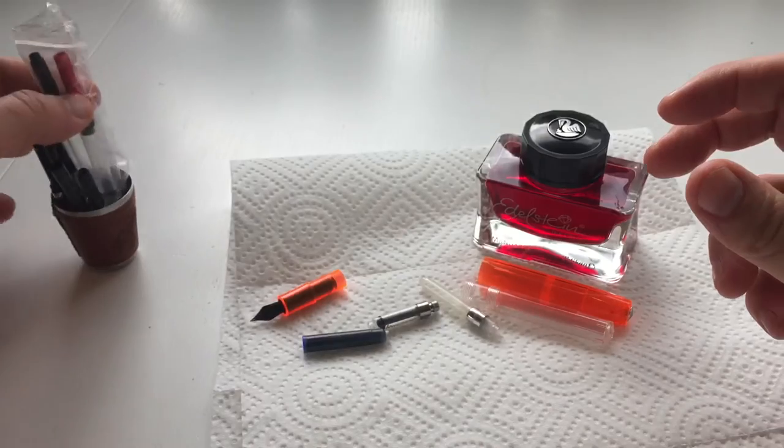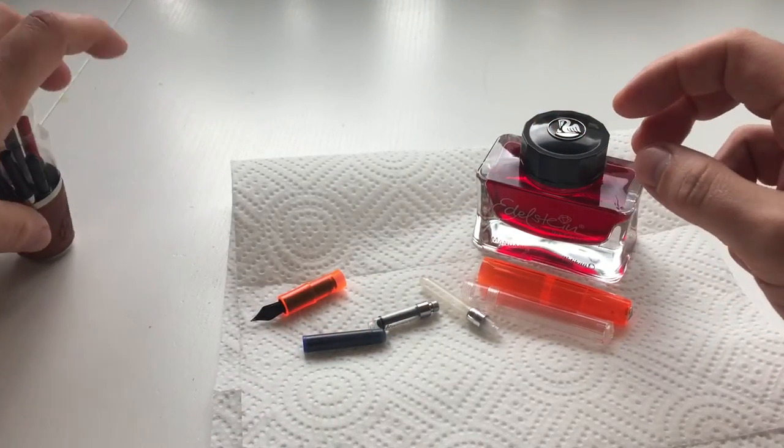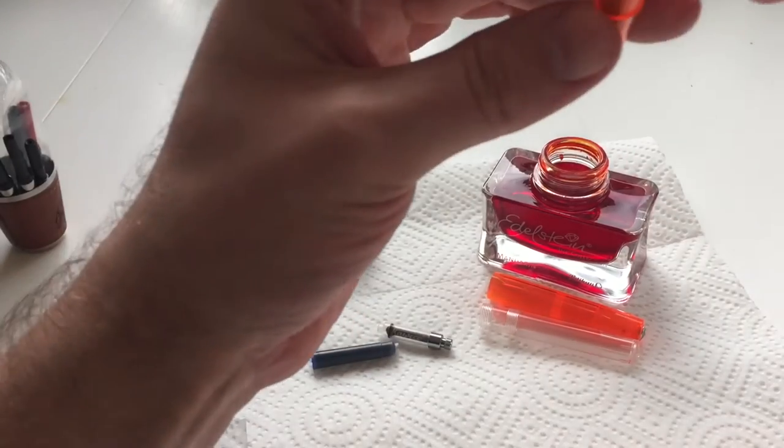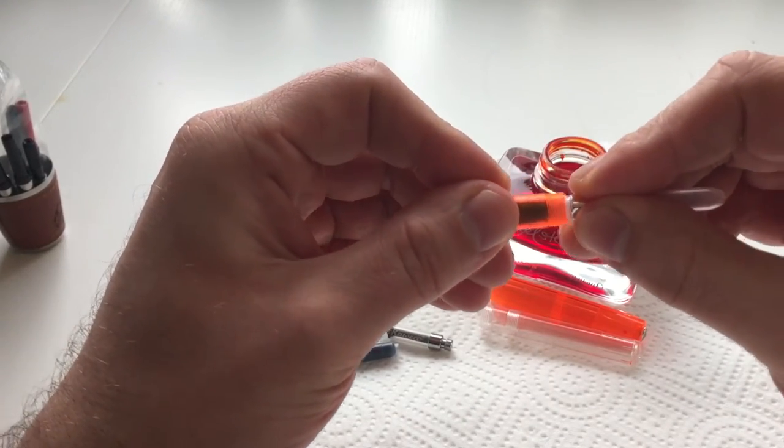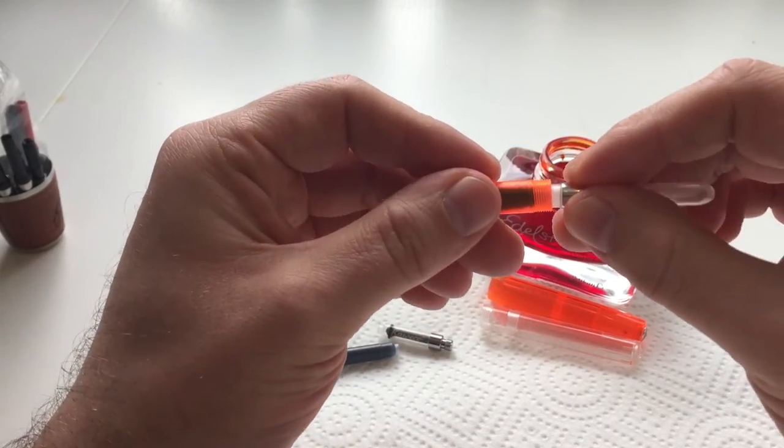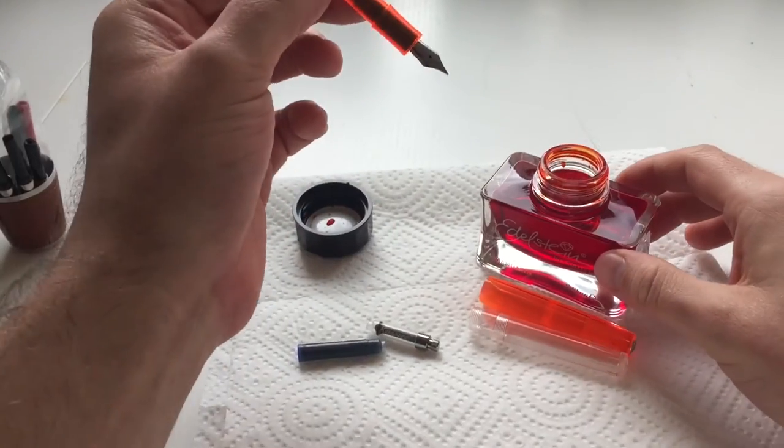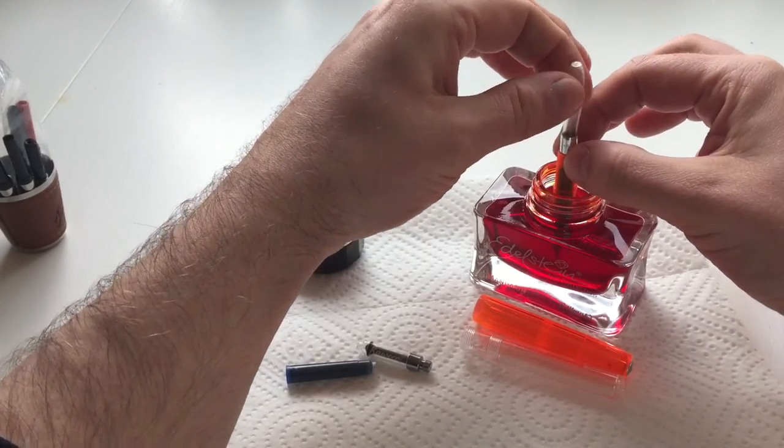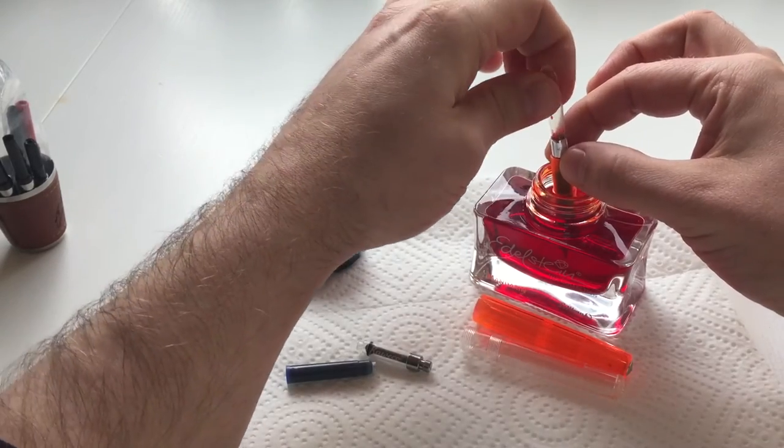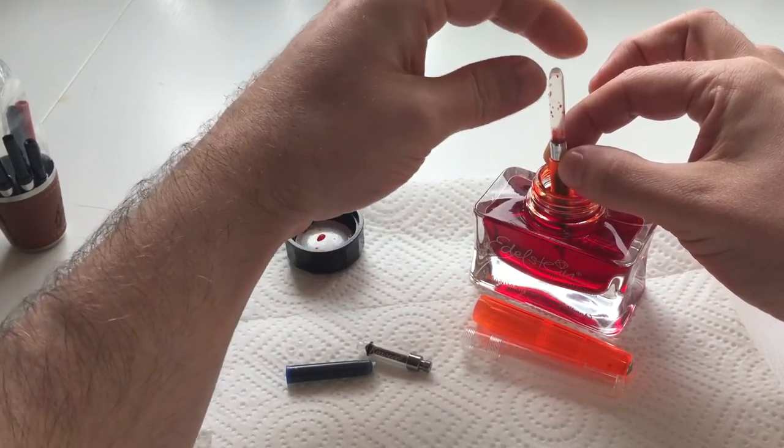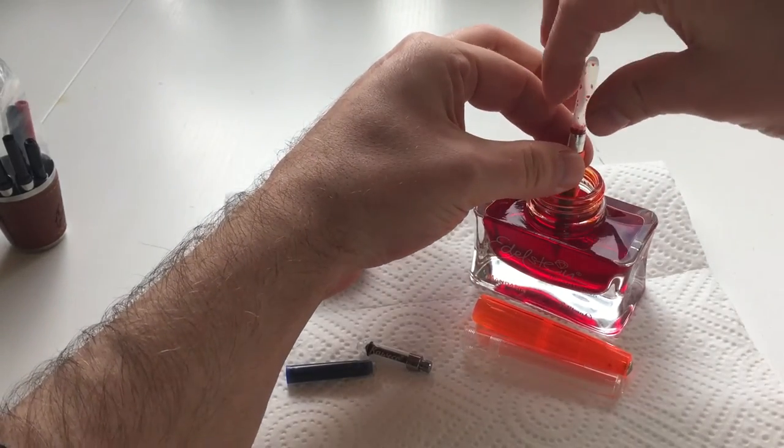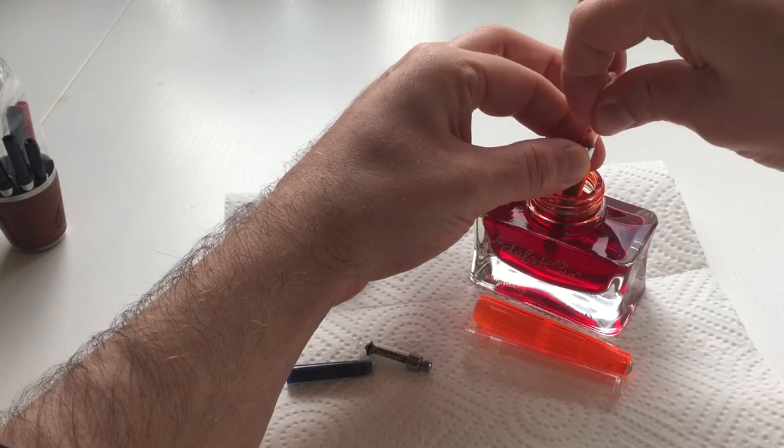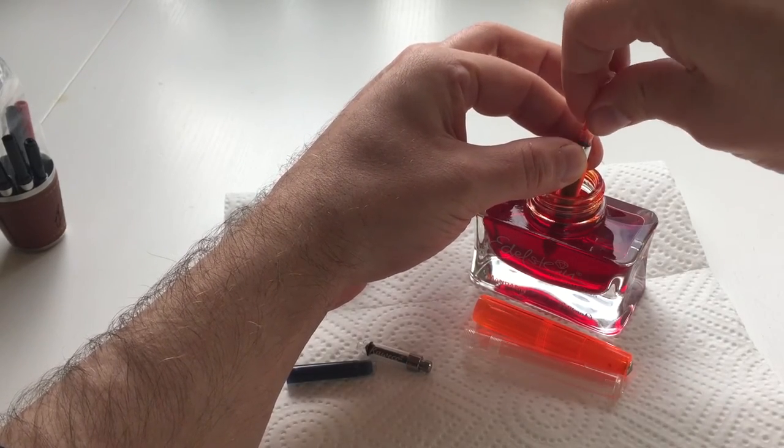So let's see how those two converters work. I'll try the push converter first by inserting the converter into the fountain pen, into the nib unit. It just clicks in like that, and then I'll submerge the nib into the ink and keep pressing and see what happens. Yeah, as one already sees, it's not working all too well.